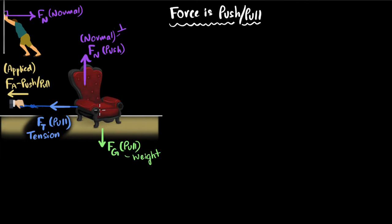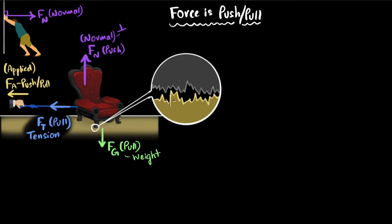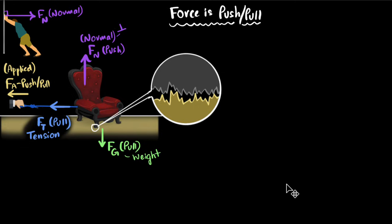If you have pushed and pulled on furniture, you know that it's extremely hard to get them moving. Why is that? Friction. To understand friction, let's look at the points of contact at a microscopic level. Although these things appear smooth, at a microscopic level they are not — you'll have mountains and valleys. When the leg of the chair tries to move past the floor, there's going to be some resistance and blockage due to this roughness. That is the frictional force.